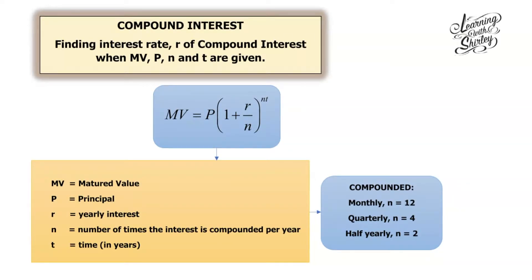The formula to find matured value is: MV equals P bracket 1 plus R over N, to the power of NT. MV stands for the matured value, P is the principal — the money put in at first, R is the yearly interest in percentage, N is the number of times interest is compounded per year — so if compounded monthly N equals 12, quarterly N equals 4, half yearly N equals 2 — and T stands for time in years.